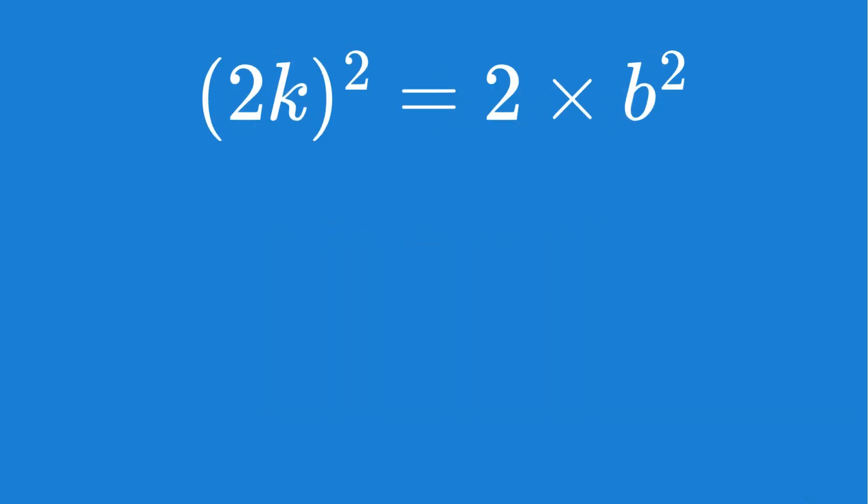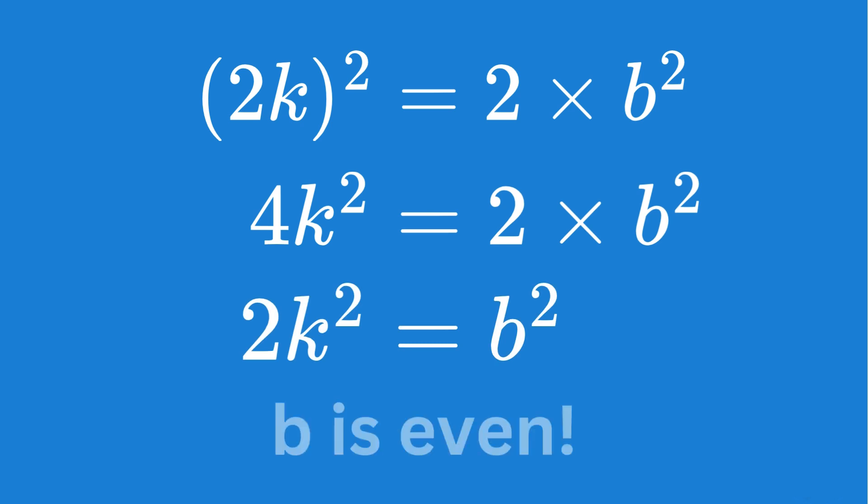Substituting this into the original equation and dividing through by 2 gives an expression which shows us that 2 is a factor of b squared, so b must be even for the same reason that a is even.